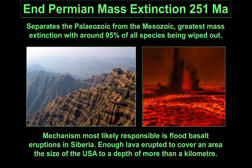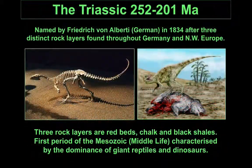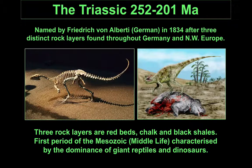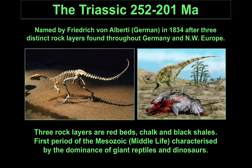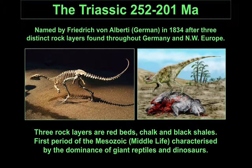This brings us to the end of the Paleozoic era. As we start the Mesozoic era, we enter the Triassic period, named after three distinctive rock layers: red beds, chalk, and black shales, representing very different environments. With enormous ecological niches opened up by the vast scale of the preceding mass extinction, we saw the evolution of giant reptiles into dinosaurs. We also saw the earliest mammals starting to appear.